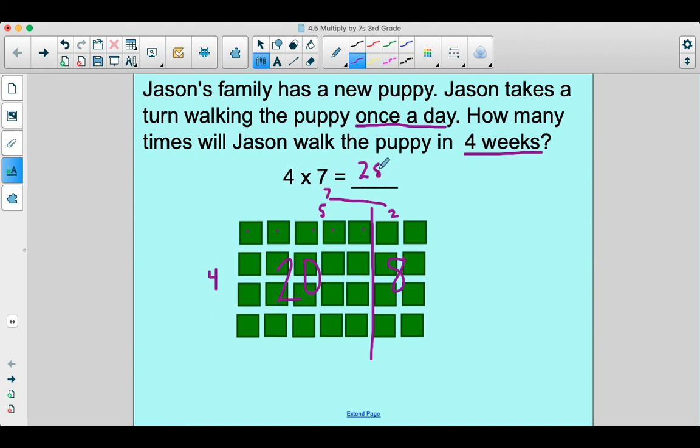So there's lots of different ways that you can break apart an array. So in this case, we separated out the seven into a five and a two, but then in another case, we actually looked at it as a doubles fact, breaking apart the four, right? So there's lots of things that you can do.